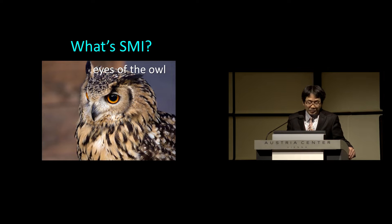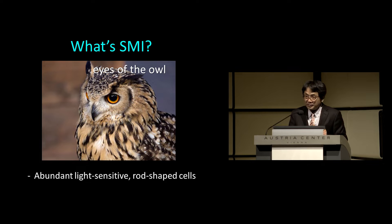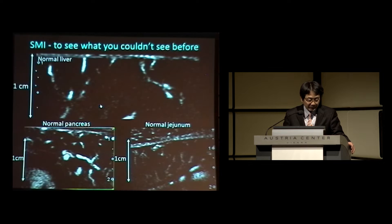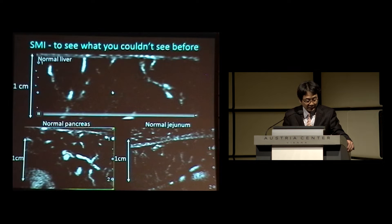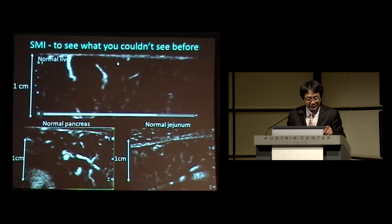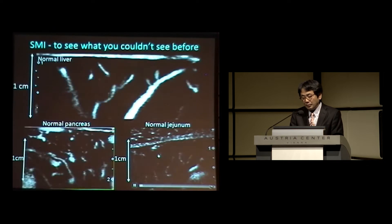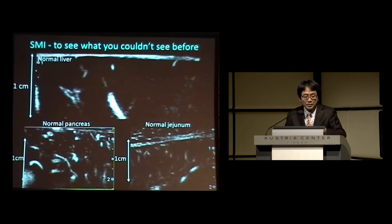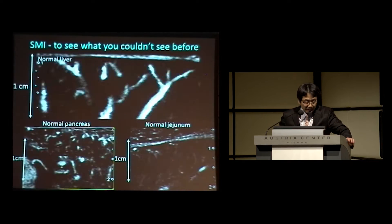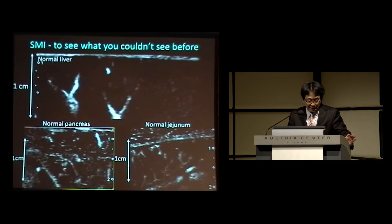I like to compare SMI to the eyes of the owl, which have abundant light-sensitive rod-shaped cells that enable them to see prey or a moving target in total darkness. That means SMI enables you to see what you couldn't see before. In the normal liver, you can see a very tiny vascular structure just beneath the liver surface. And even in normal pancreas and normal jejunum, SMI can still delineate normal vessels inside these organs.